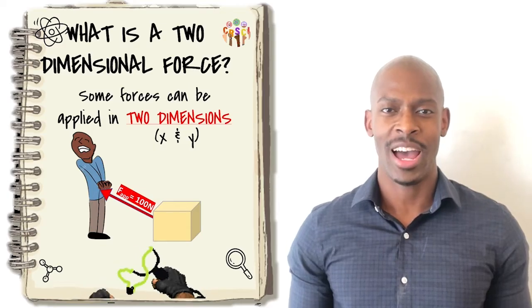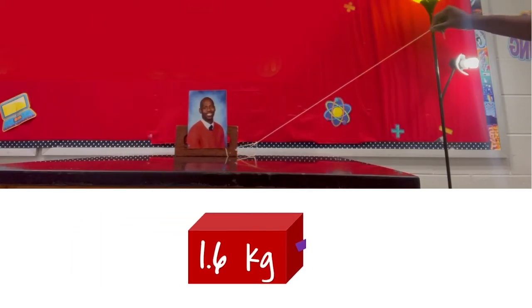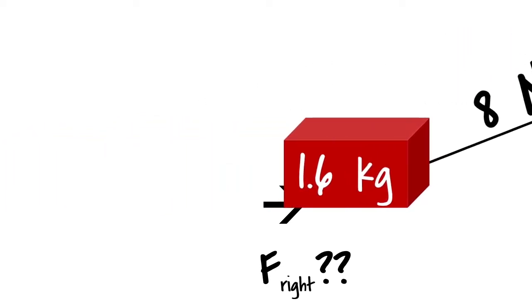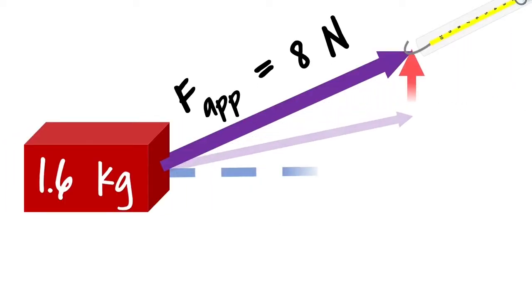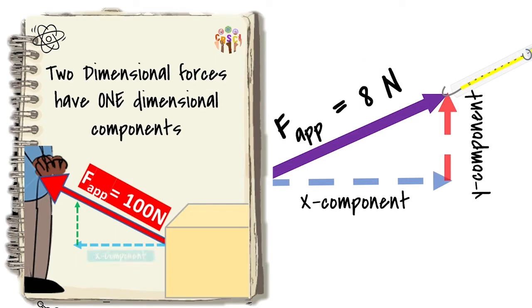Some forces can be applied in two dimensions. Since this brick is only accelerating to the right, I want to figure out exactly how much I'm pulling to the right by breaking this two-dimensional force into its components. Each part of a two-dimensional force has a one-dimensional component. How are we supposed to find these components anyway?